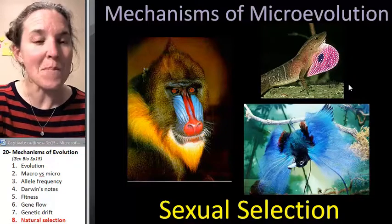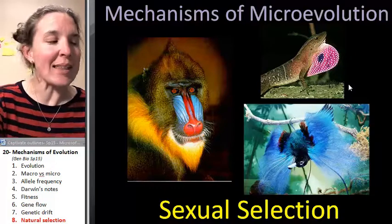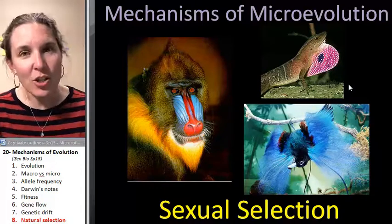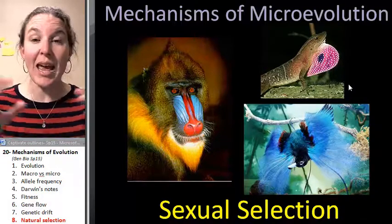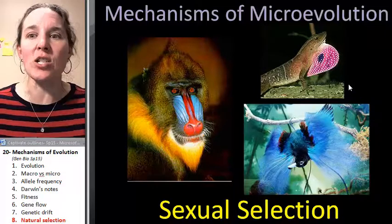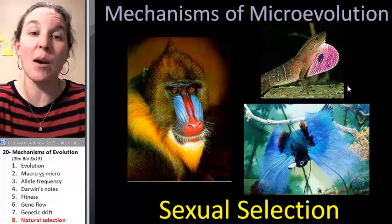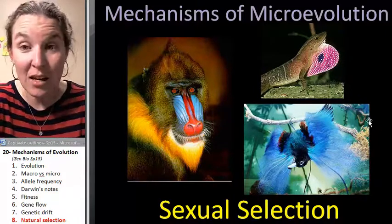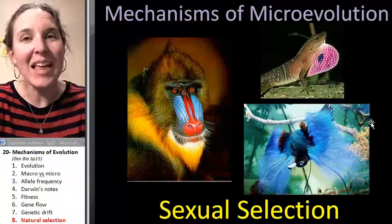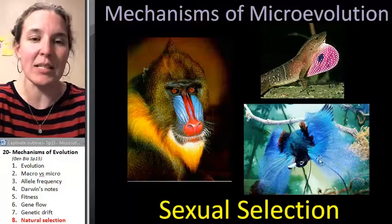Mechanisms of evolution — you've got a bunch of them. In the next lecture, we're going to talk about speciation and look at big changes, like how we could possibly end up with different species from these kinds of processes.